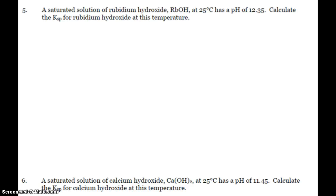Alright, so let's make sure we know how to do these Ksp problems involving pH. We have a saturated solution of rubidium hydroxide with a pH of 12.35. So if the pH is 12.35, my pOH is going to be 1.65. And then 10 to the negative pOH equals my hydroxide concentration, which comes out to be 0.0224 molar.